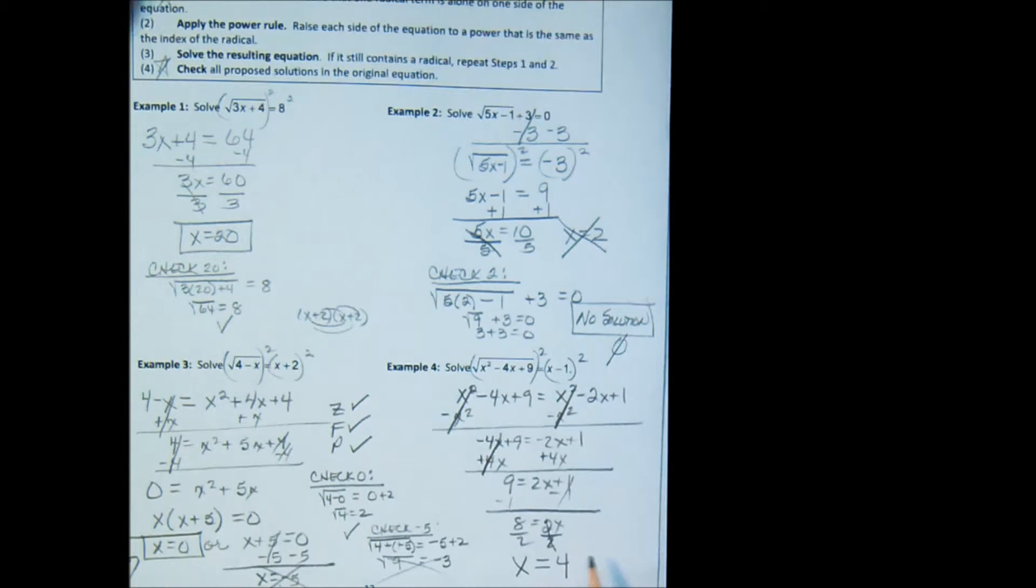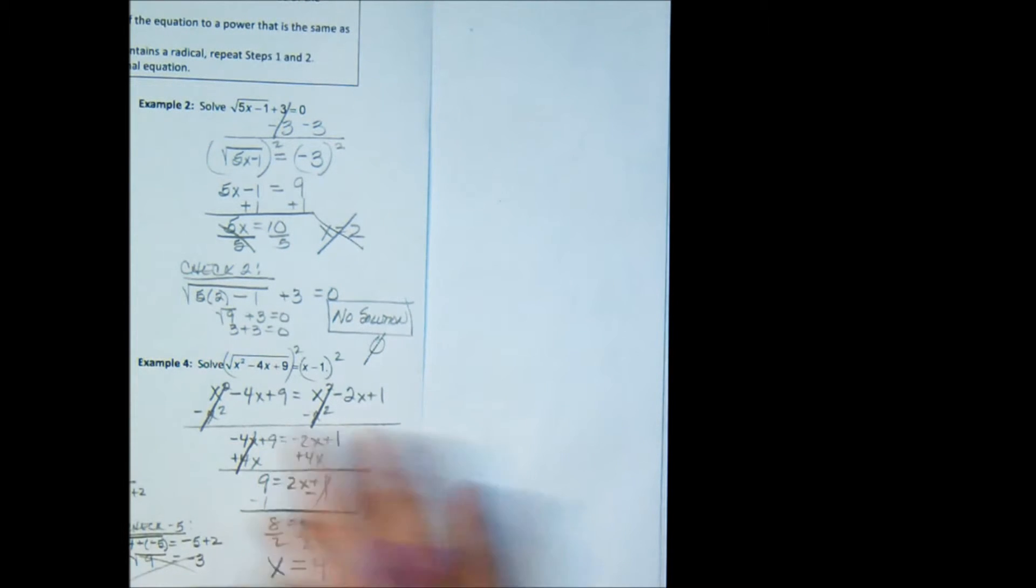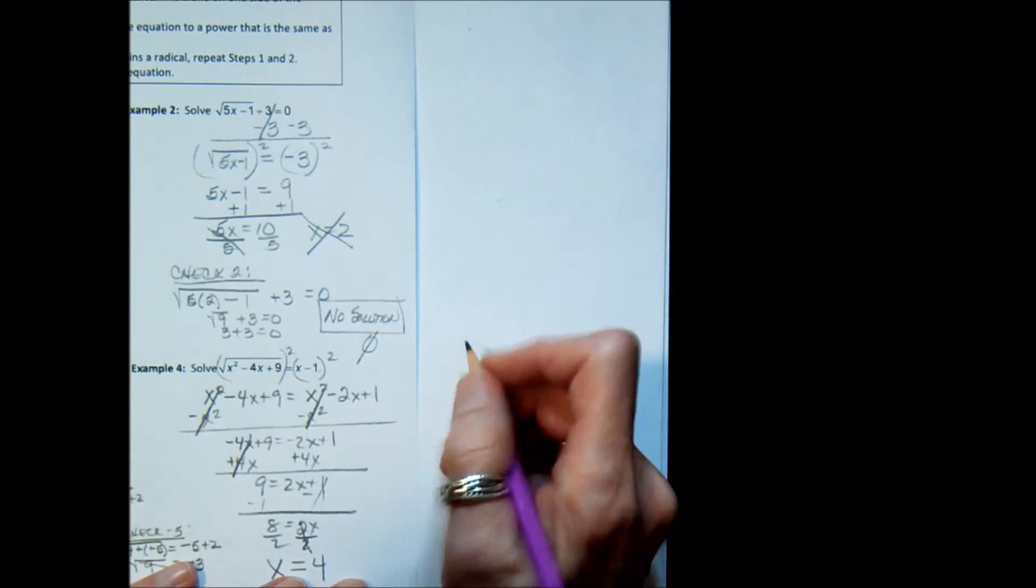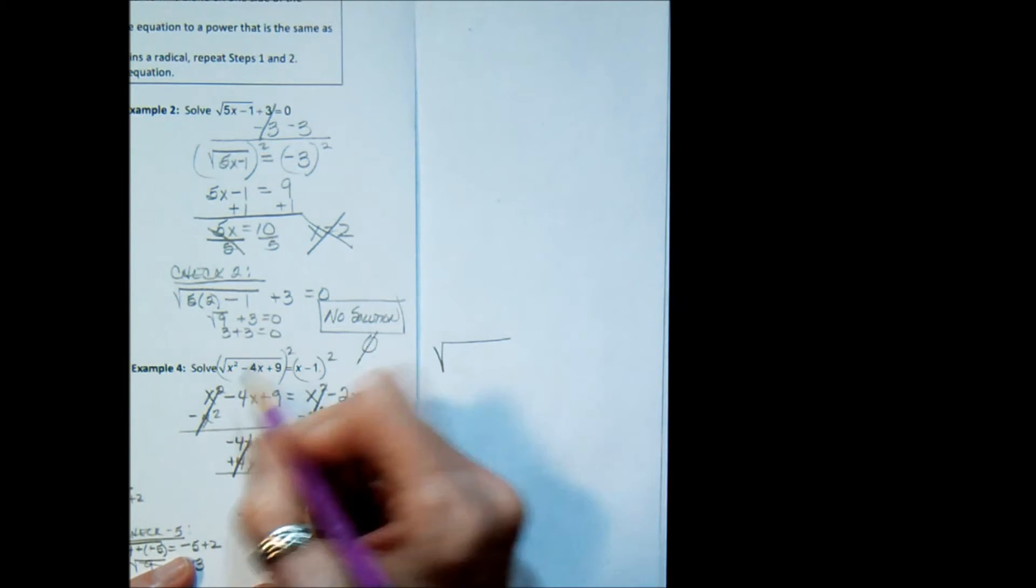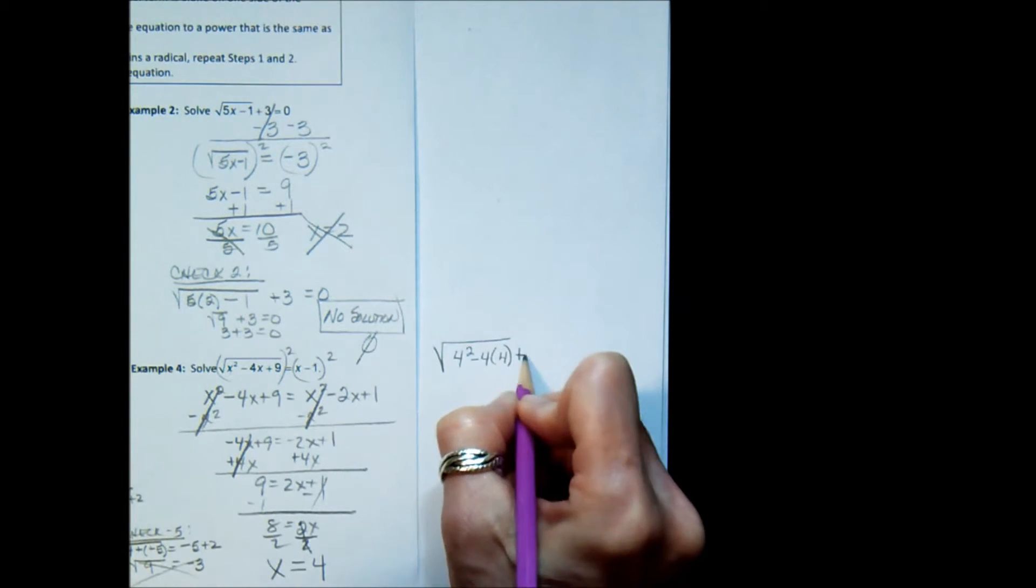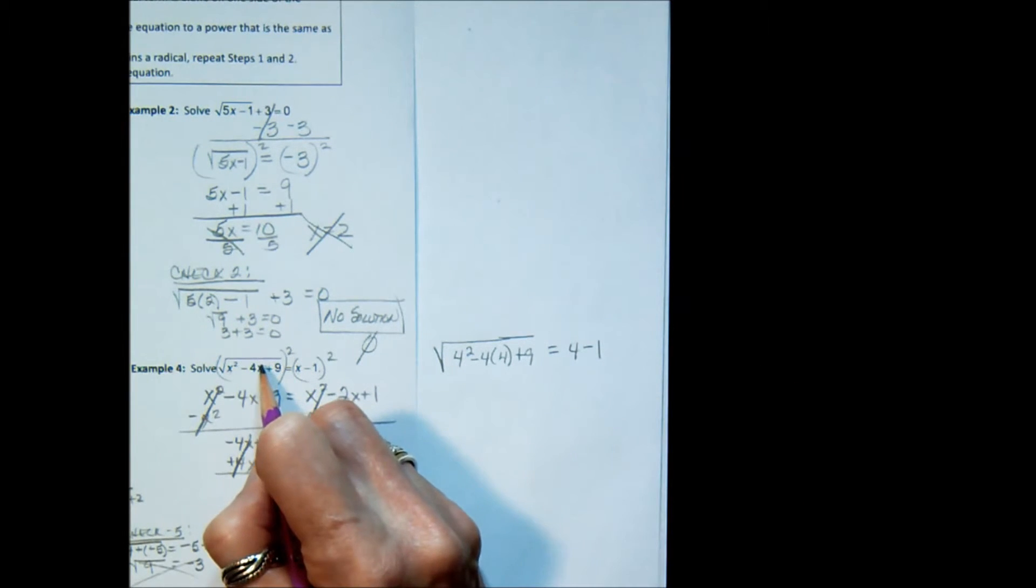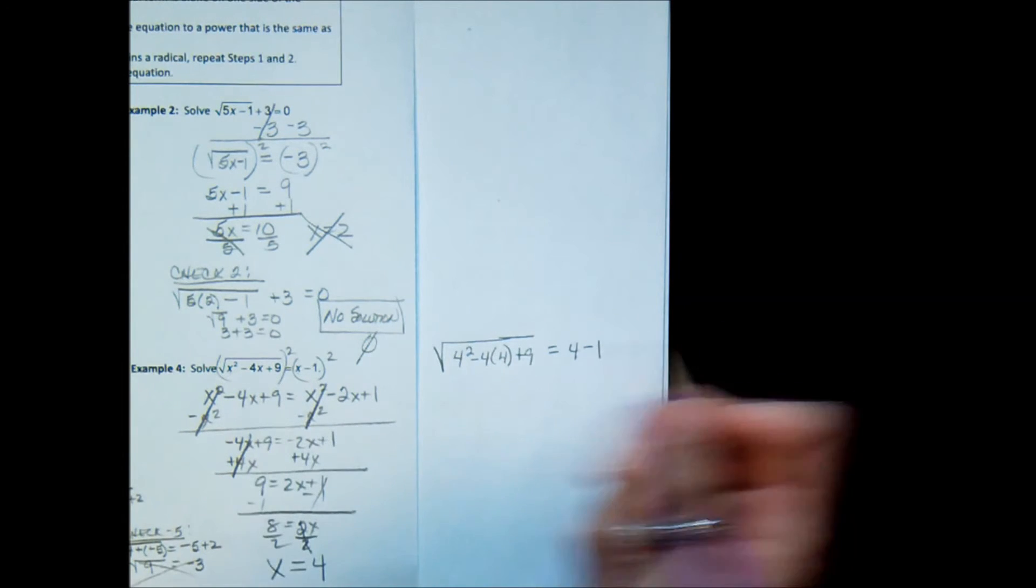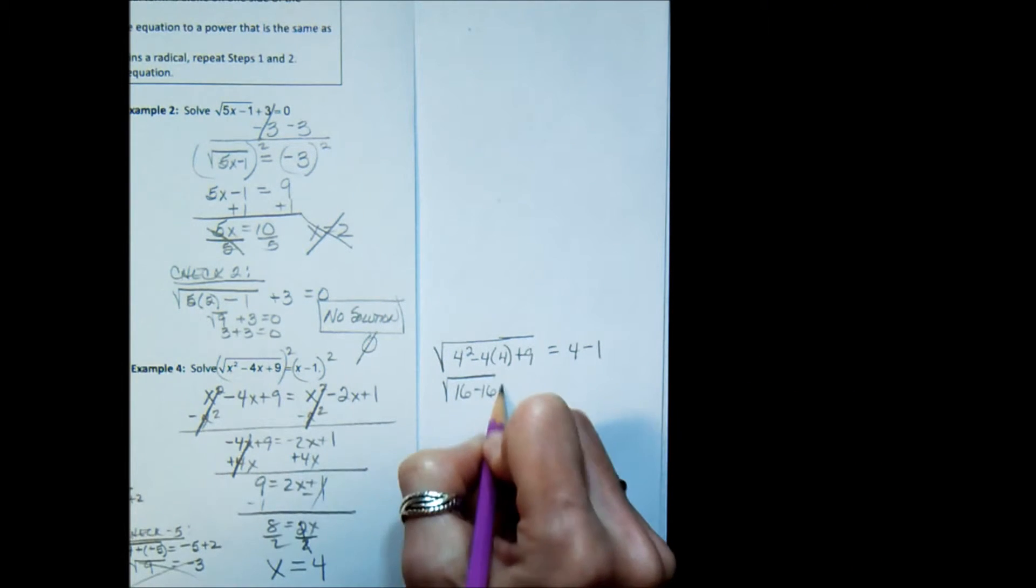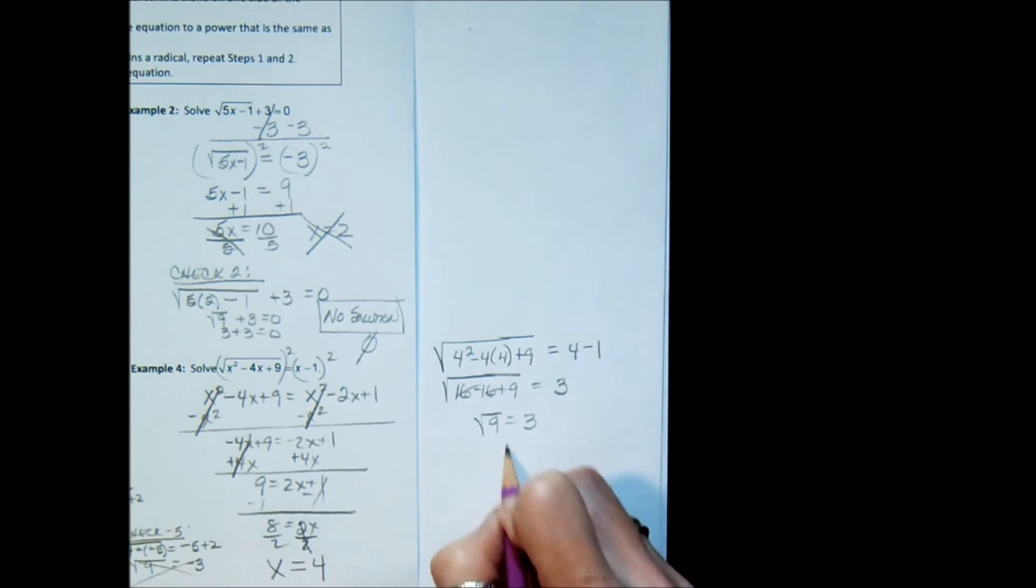But we have to check it. And I am going to check it on another sheet of paper because we don't have space right here. So that would mean the square root of 4 squared minus 4 times 4 plus 9. Is that equal to 4 minus 1? I put the 4 in for every one of the x's. So is the square root of 16 minus 16 plus 9 equal to 3? Is the square root of 9 equal to 3? Yes it is. So my 4 does check.